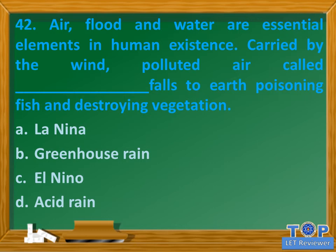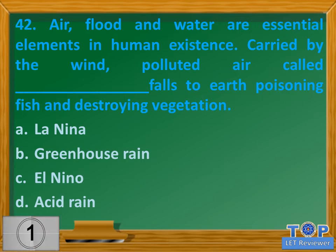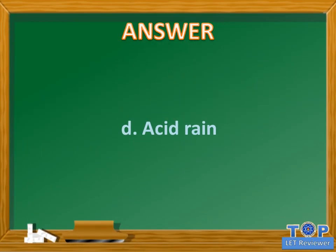Question number 42. Polluted air called blank falls to earth poisoning fish and destroying vegetation. A. La Nina. B. Greenhouse rain. C. El Nino. D. Acid rain. Answer: D. Acid rain.